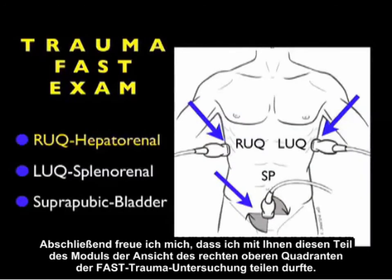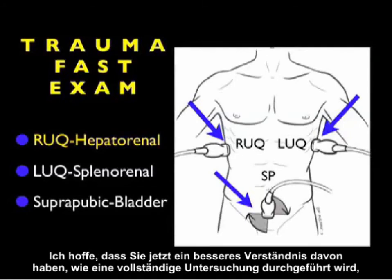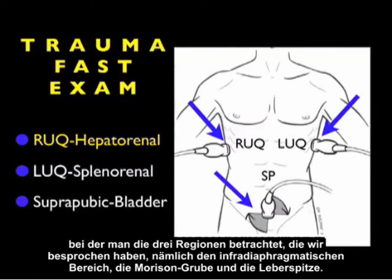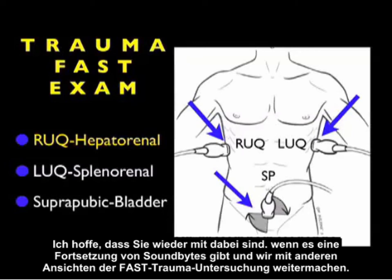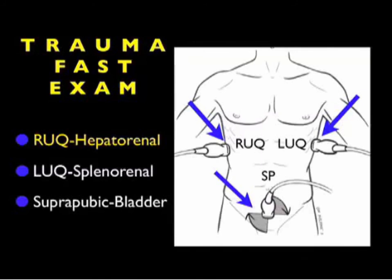In conclusion, I'm glad I could share this Part 2 module on the Right Upper Quadrant View of the Trauma Fast Exam. I hope you now have a better understanding of how to perform a complete exam looking at the three areas: infradiaphragmatic, Morrison's pouch, and inferior tip of the liver. Hopefully you'll now be able to discern the presence of fresh blood versus clotted blood on bedside sonography. I hope to see you back as SoundBytes Cases continues and we move through the other views of the Trauma Fast Exam.